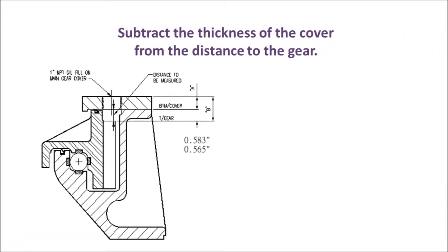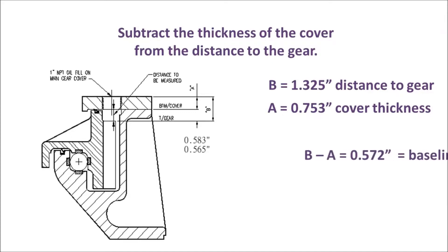From there, we take the distance of the gear, dimension B, and subtract the cover thickness, dimension A, and establish a baseline measurement that should be within our manufactured specification of .565 to .583, which it is.